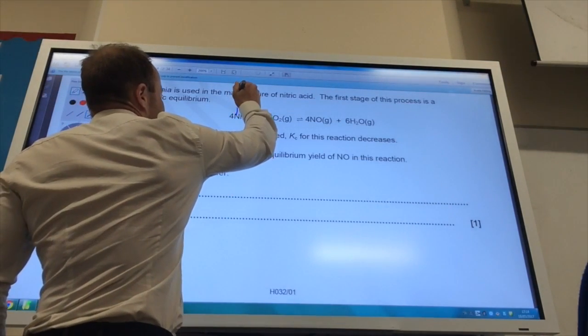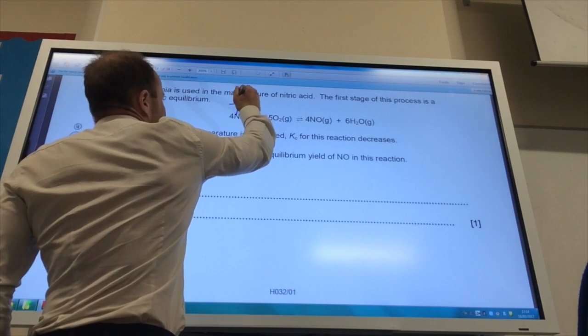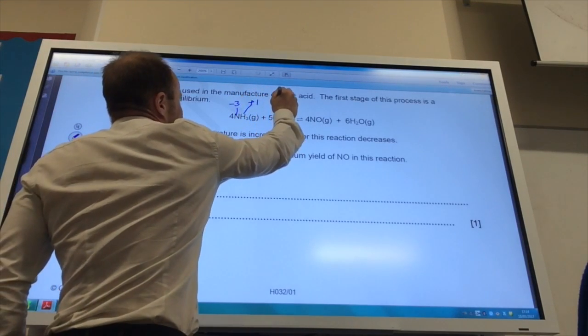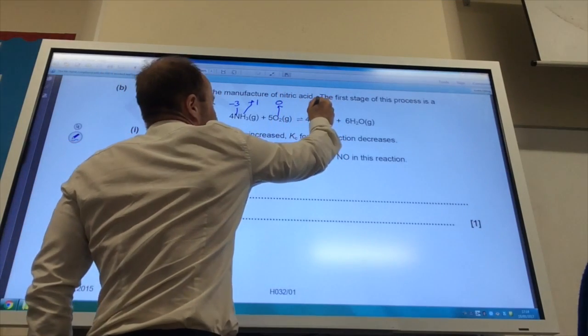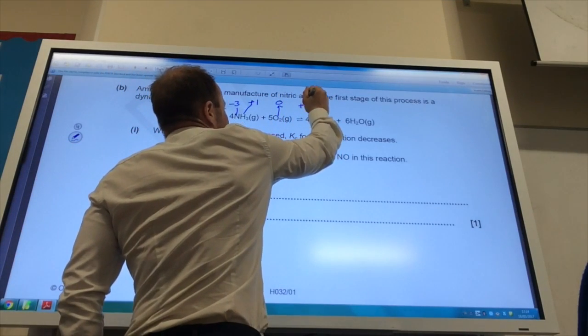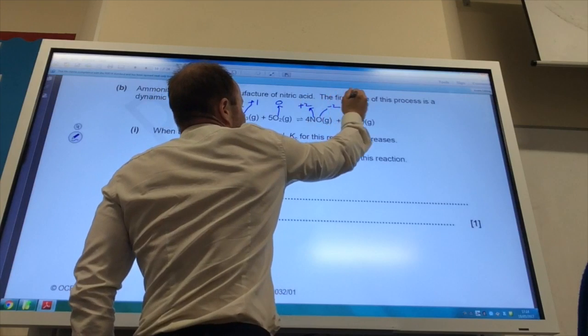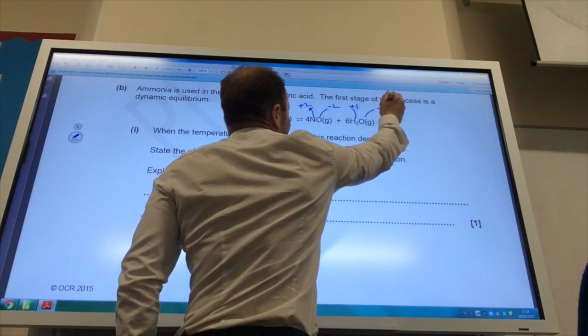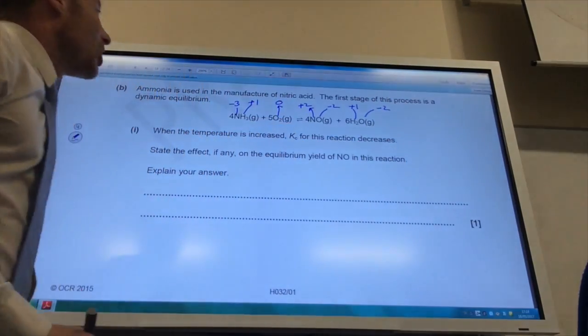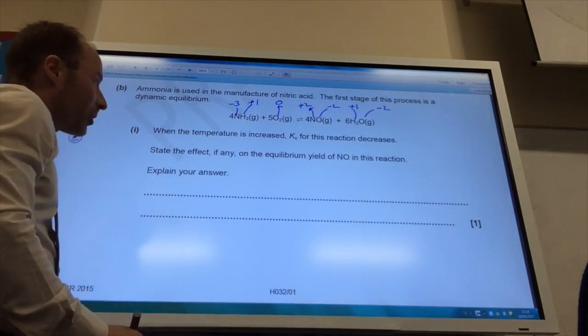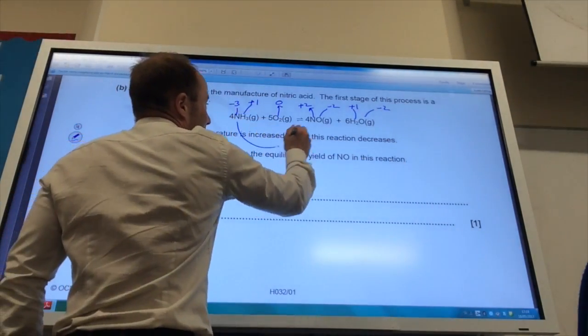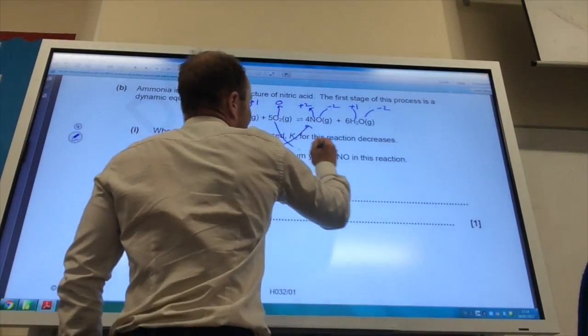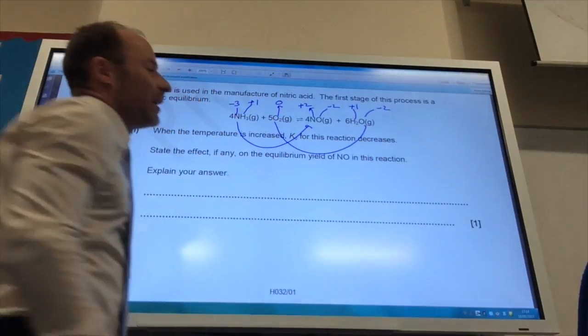Nitrogen here is going to be minus 3 because each hydrogen is plus 1. Oxygen here is 0. Nitrogen here is going to be plus 2 because oxygen is minus 2, and hydrogen there is plus 1 and oxygen is minus 2. So nitrogen has been oxidized from minus 3 to plus 2, and oxygen has been reduced from 0 to minus 2.